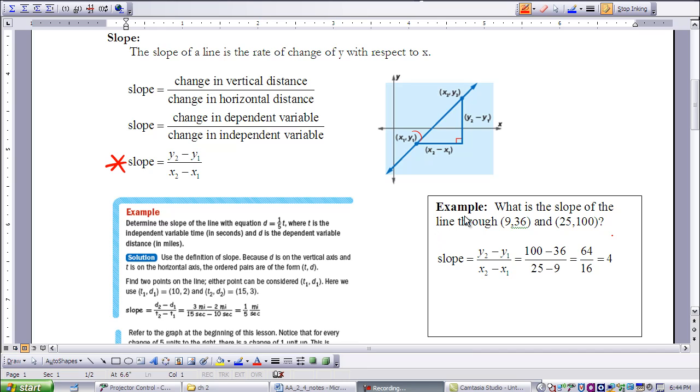If we follow our formula, our change in Y values, 100 minus 36, over our change in X values, which are 25 minus 9. When we simplify that, we get 100 minus 36 being 64, 25 minus 9 being 16, and that simplifies to 4. So we know that the slope of our line with the points 9, 36, and 25, 100 is 4.